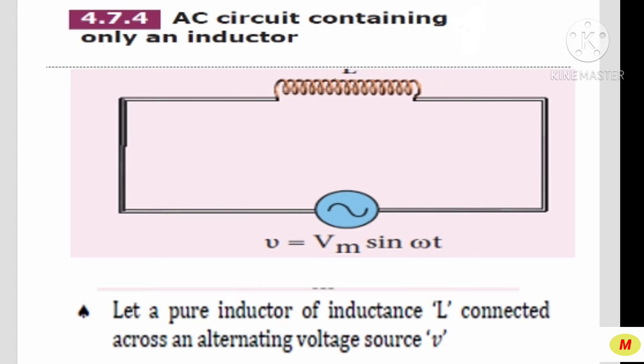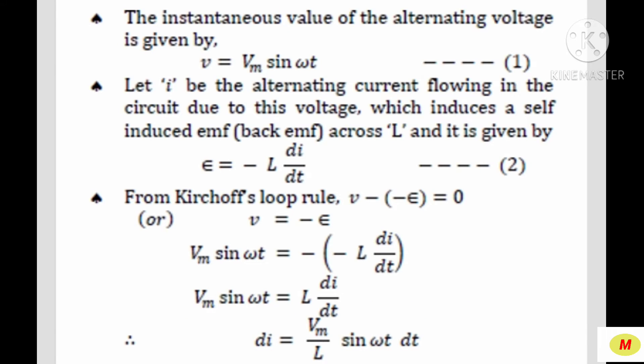Look at the picture. An inductor L is connected across an alternating voltage source V. The instantaneous value of the alternating voltage is written as V = Vm sin ωt — this is equation number 1. Let small i be the alternating current flowing in the circuit due to this voltage, which induces a self-induced EMF, called back EMF across the inductor L, written as ε = −L(di/dt) — this is equation number 2.